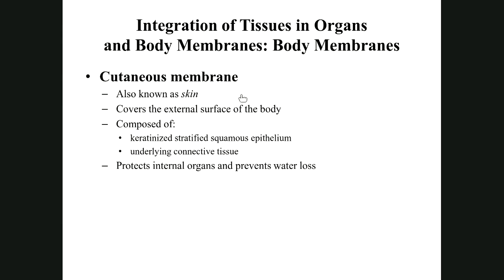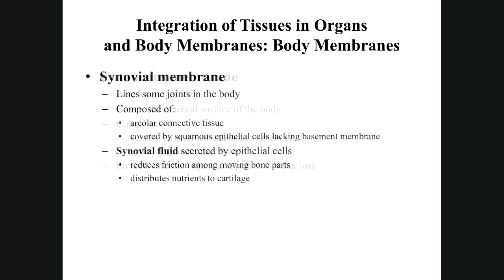The cutaneous membrane — your skin — is the epidermis plus dermis. It lines our outside and protects from dehydration and other environmental threats. The synovial membrane lines most joints in the body and produces synovial fluid, which reduces friction. Synovial fluid also acts like blood for cartilage, supplying chondrocytes with nutrients and removing waste, since cartilage is avascular and sponge-like.